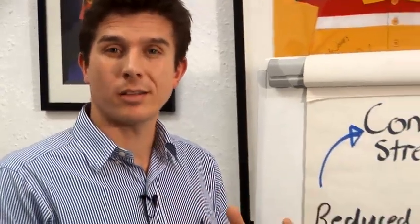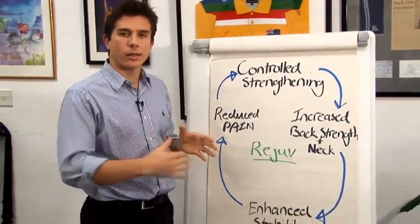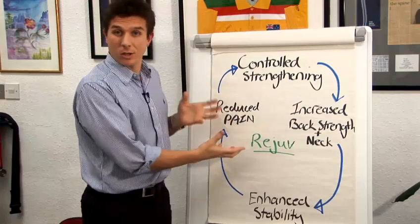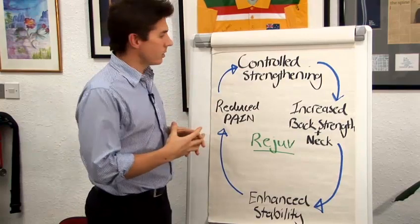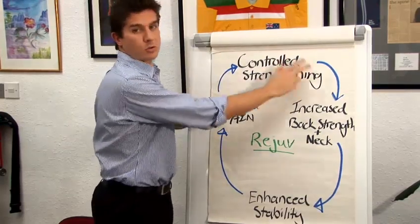Now if you want to really treat chronic pain successfully you have to look at things a bit differently. Now this is the virtuous circle of chronic pain or chronic pain treatment. What we have to do with chronic pain is we have to do controlled strengthening.